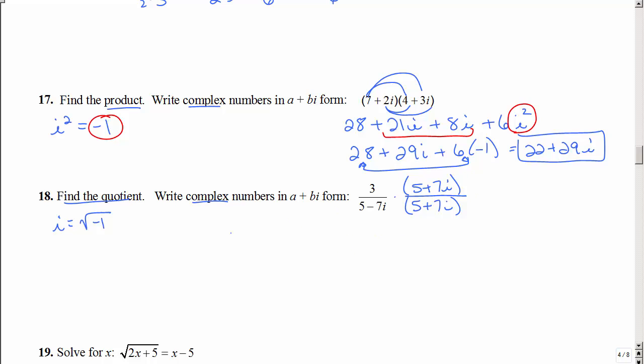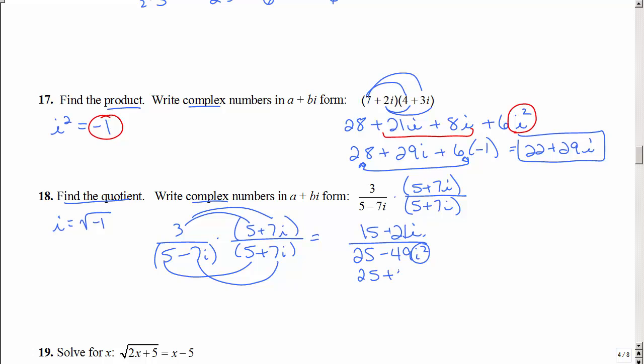So how do I do this? I'm going to come down here so it's a little bit more room. On top, easy peasy, just distribute. On the bottom, that's 25. That's negative 49i squared, and the middle terms are 0. This is negative 1, so this is really 25 plus 49.